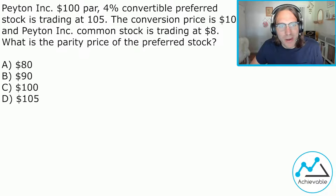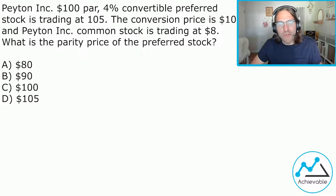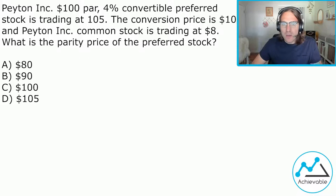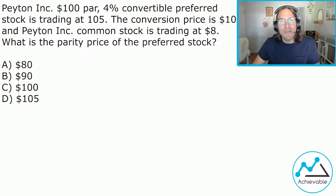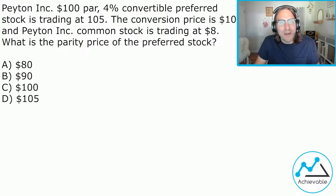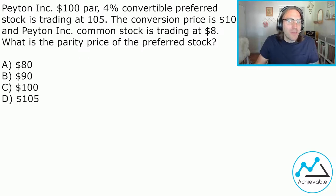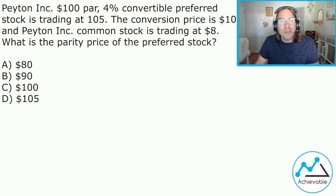Payton Incorporated, $100 PAR, 4% convertible preferred stock is trading at $105, the conversion price is $10, and Payton Inc. common stock is trading at $8. What is the parity price of the preferred stock? That's a lot of information given in just a few sentences — a lot of numbers — and like with most math-based questions, some of these numbers are probably going to be used, and some of them are not. So let's go ahead and pick it apart sentence by sentence.